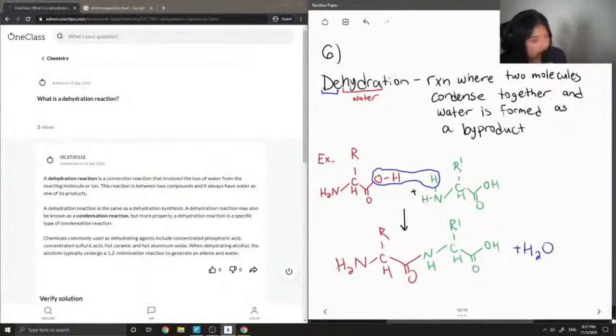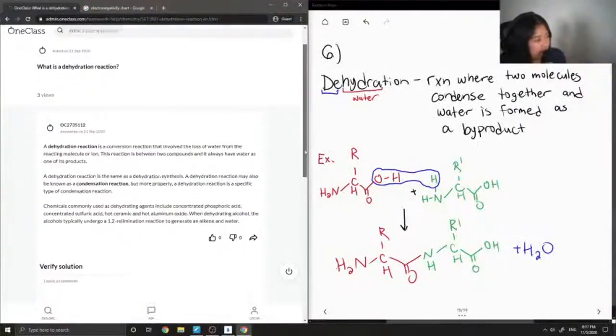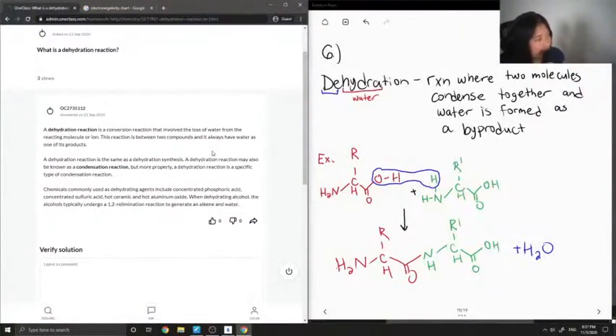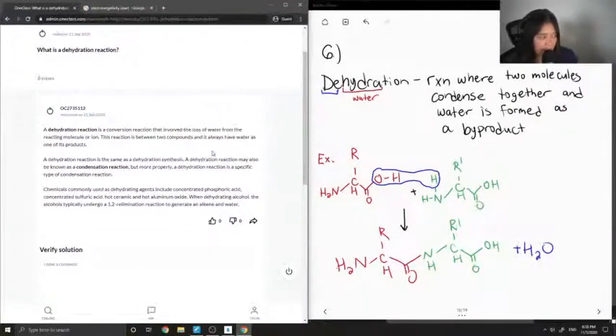So let's see what our junior tutor said. A dehydration reaction is a conversion reaction that involved the loss of water from the reacting molecule or ion. This reaction is between two compounds and it always has water as one of its products. A dehydration reaction is the same as a dehydration synthesis. A dehydration reaction may also be known as a condensation reaction, but more properly, a dehydration reaction is a specific type of condensation reaction.